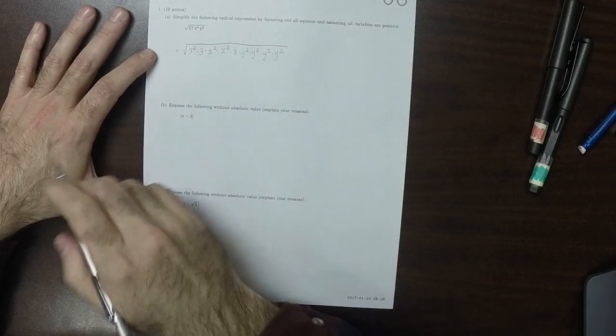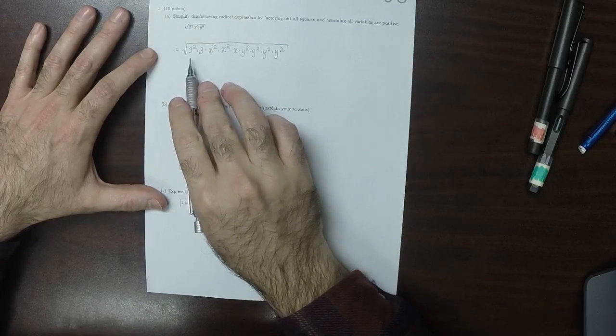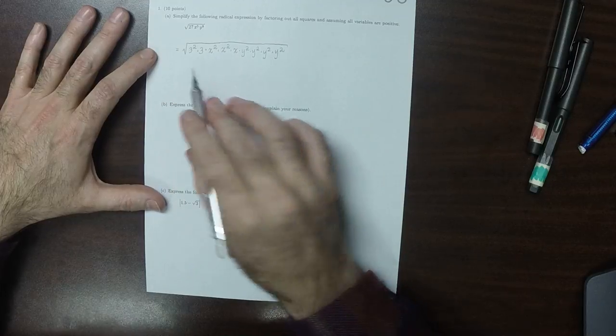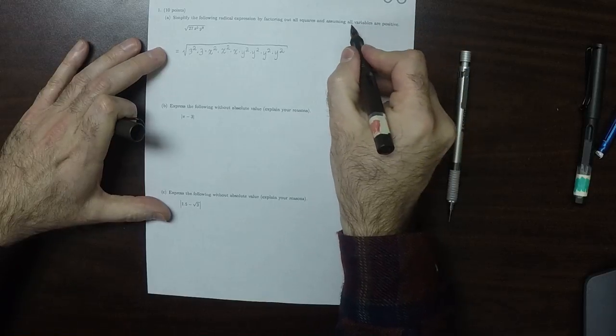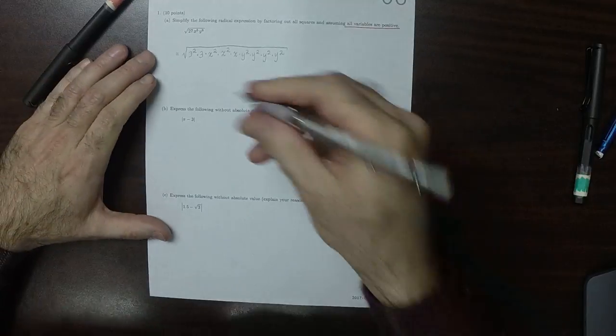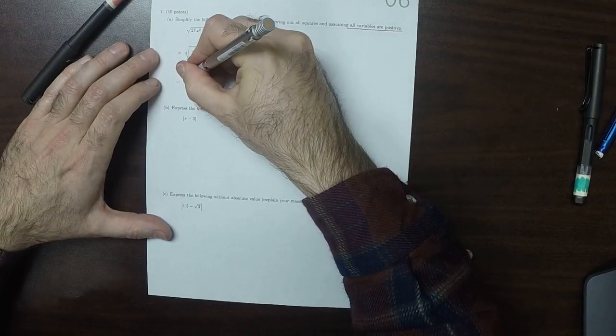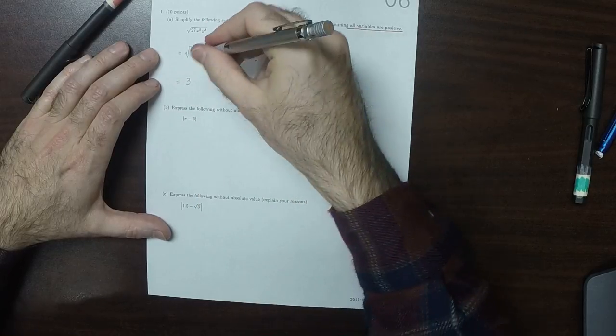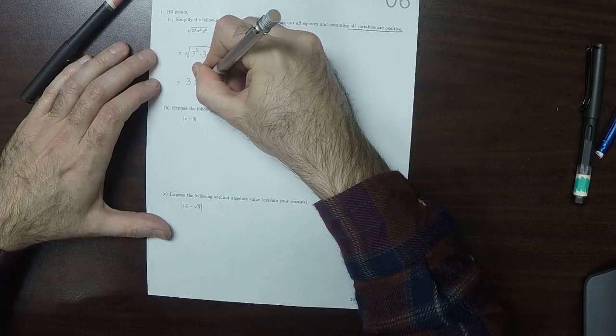So each one of those squares can come out of the square root as themselves. So 3 squared comes out as 3. x squared is going to come out as x because we're assuming all variables are positive. That's important. So we get a 3 to come out, an x to come out, another x to come out.